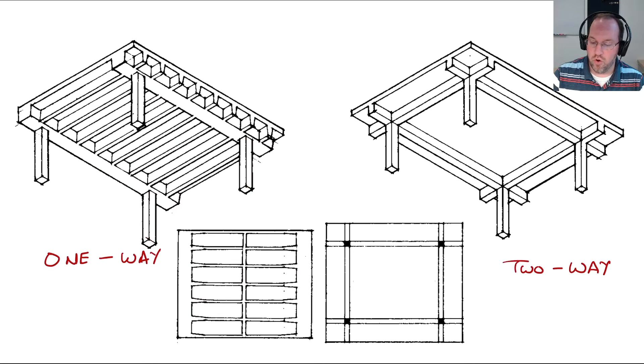If we look at the load path for a specific load placed here, it's going to travel to its nearest joist, then travel down that joist, then down the girder, and finally down my column to my foundation.